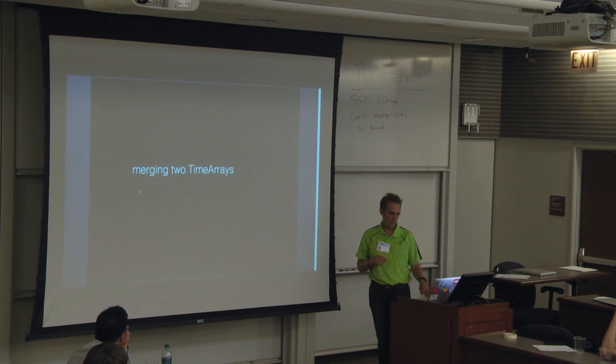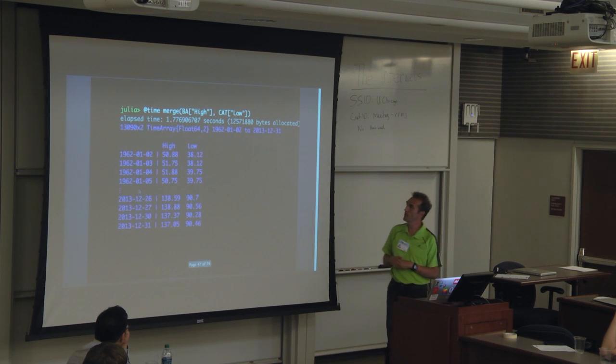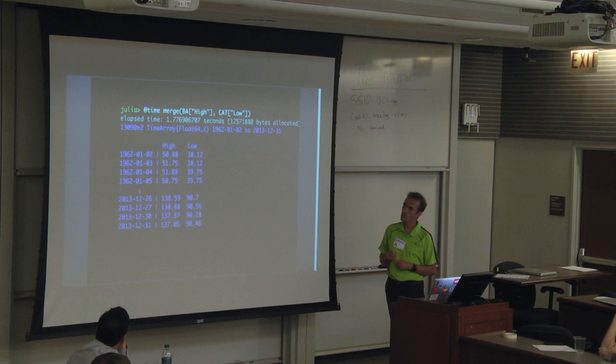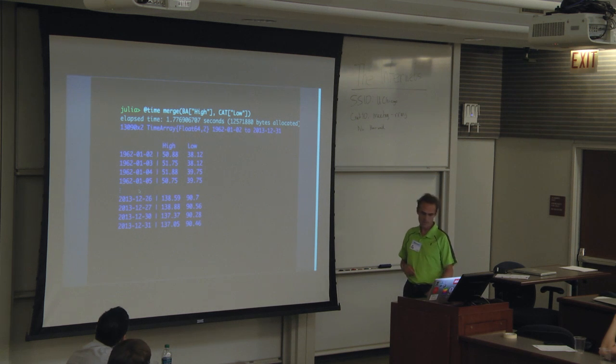So merging two TimeArrays, this is not very pretty, but it does work kind of. It's merging the Boeing high prices with the Caterpillar low prices. You see 13,000 rows. It does its job, it takes quite a bit of time to do it. It takes 1.8, pretty much 1.8 seconds.